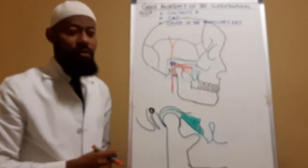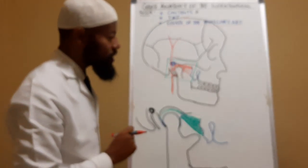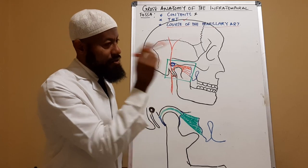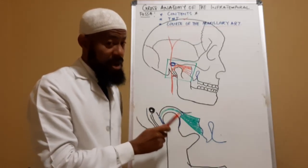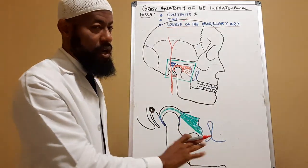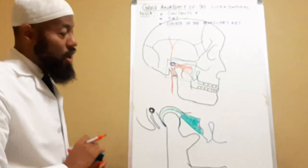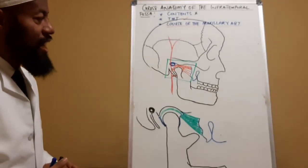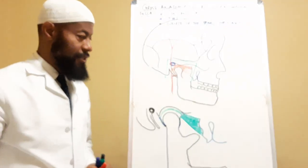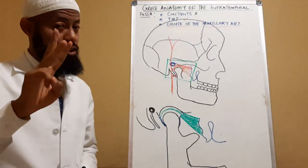The maxillary artery runs deep to the neck of the mandible and has a relationship to the pterygoid muscle. I've represented the pterygoid muscle in green and the artery in red so we don't mix them up. In terms of description, the course of this artery — it is in relation to the lateral pterygoid muscle, and it is divided into three parts.